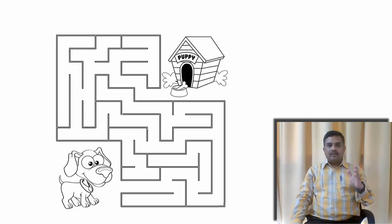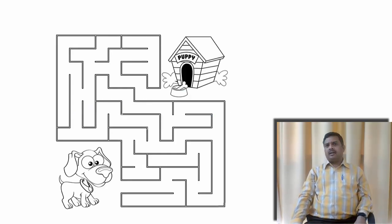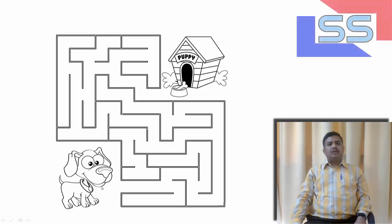In our childhood we have played this kind of game, haven't we? A dog is there and there are roads and based on these roads we want to take this puppy to his home. We have tried this kind of problem during our childhood. Let us try once more.